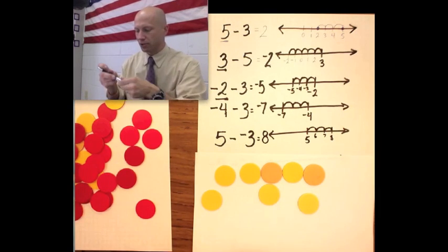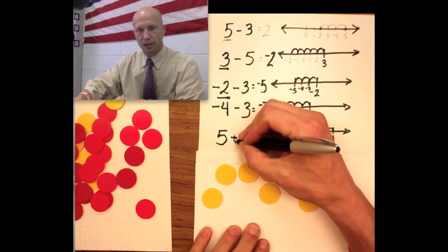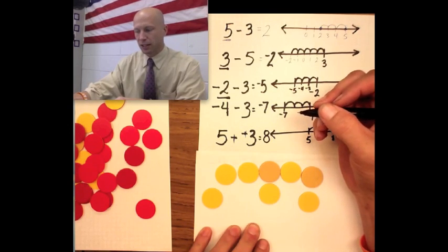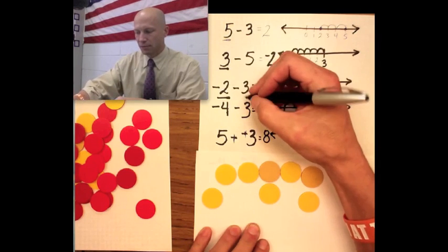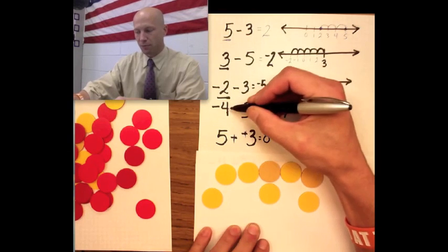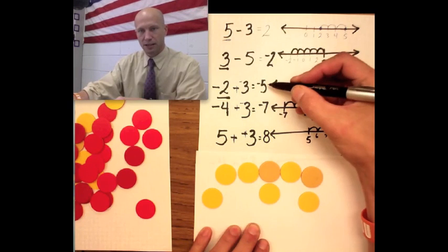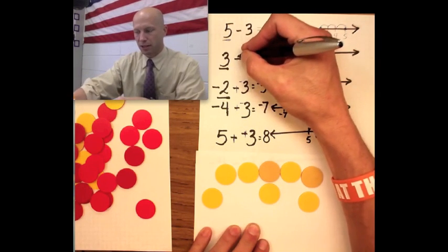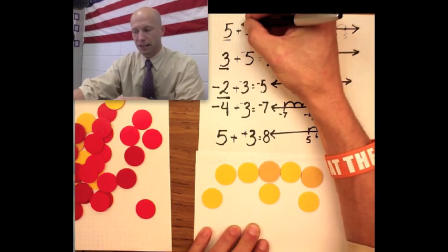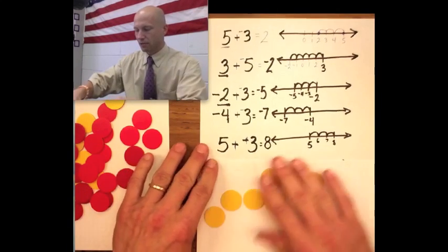There's another way of looking at this and a lot of people just say add a line, change the sign. You can add a line and change subtraction to addition. So really any subtraction problem is really just adding the opposite. Negative 4 minus 3 is the same as negative 4 plus negative 3. Negative 2 minus 3 is negative 2 plus negative 3. 3 minus 5 is really 3 plus negative 5. And 5 minus 3 is really 5 plus negative 3. Why you would ever want to change 5 minus 3 to something that's more difficult, no one knows.